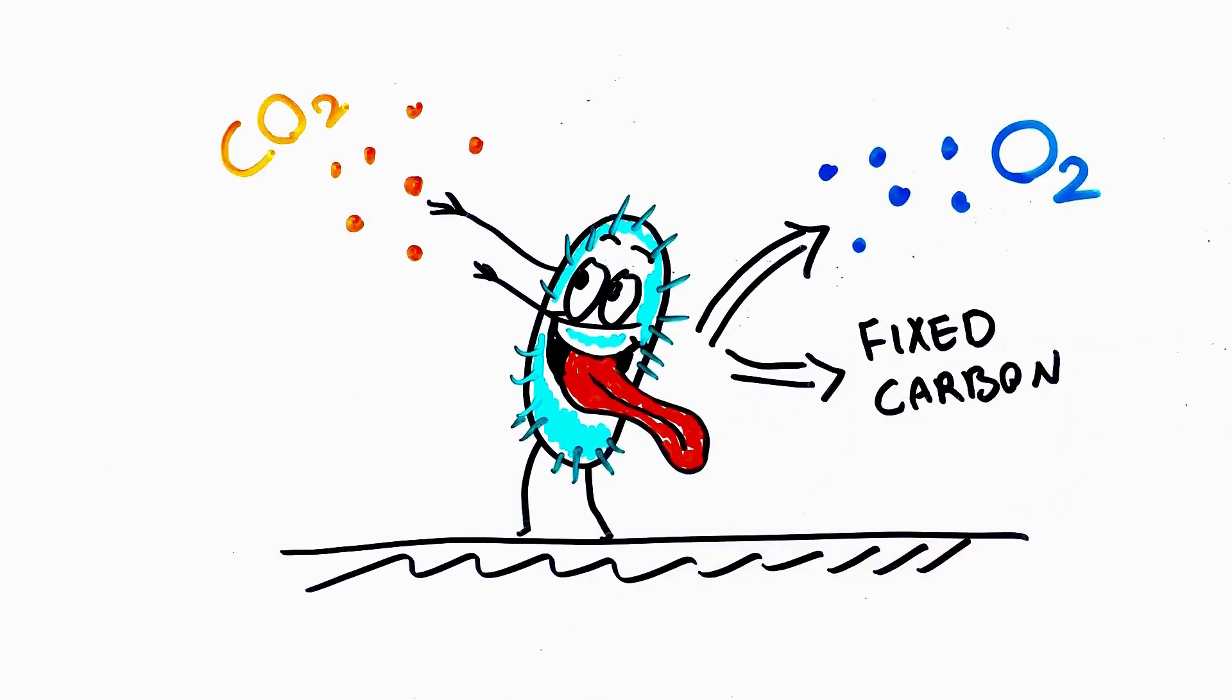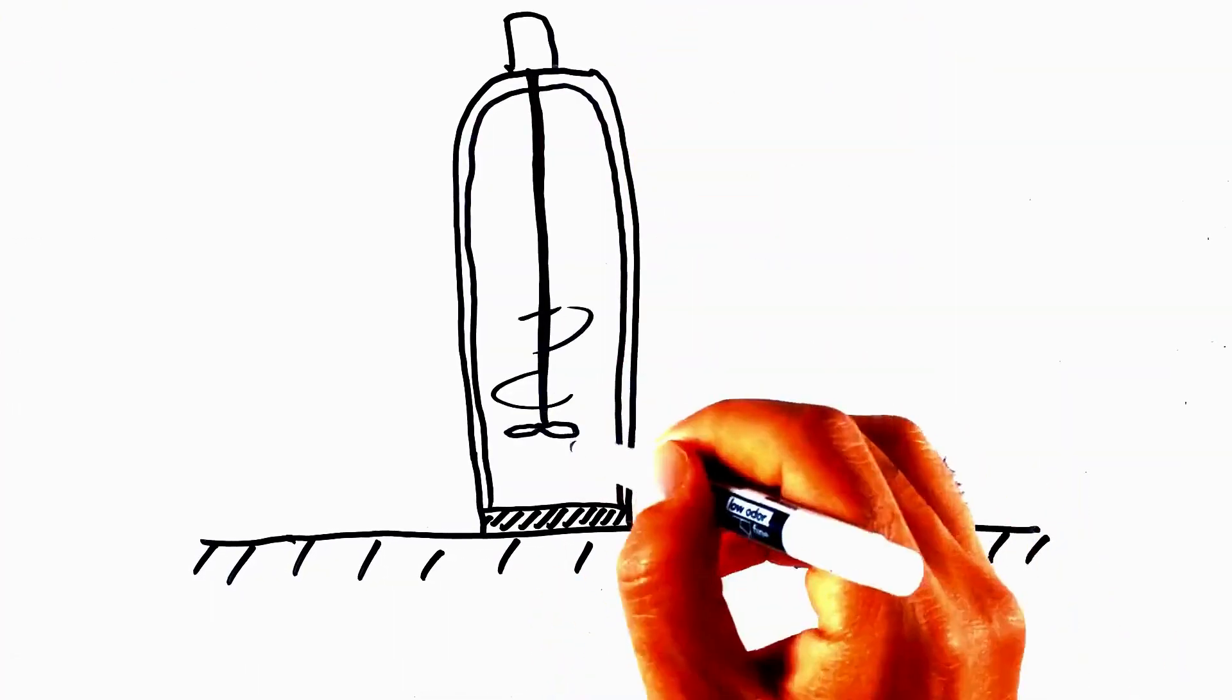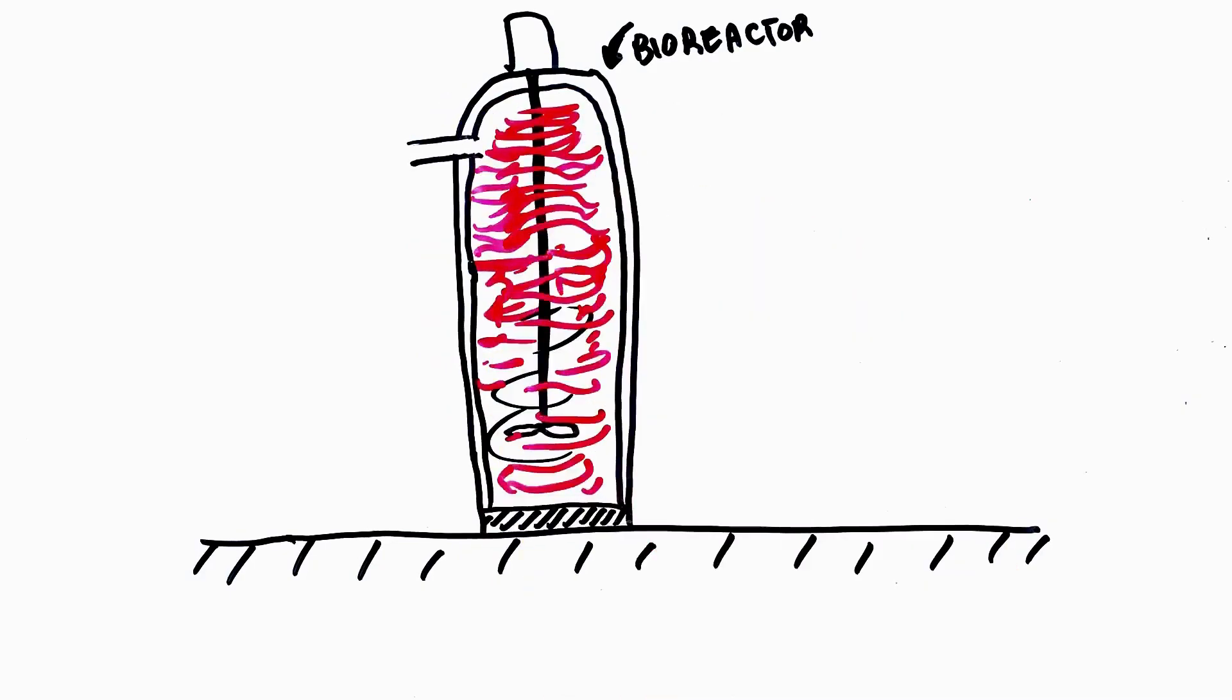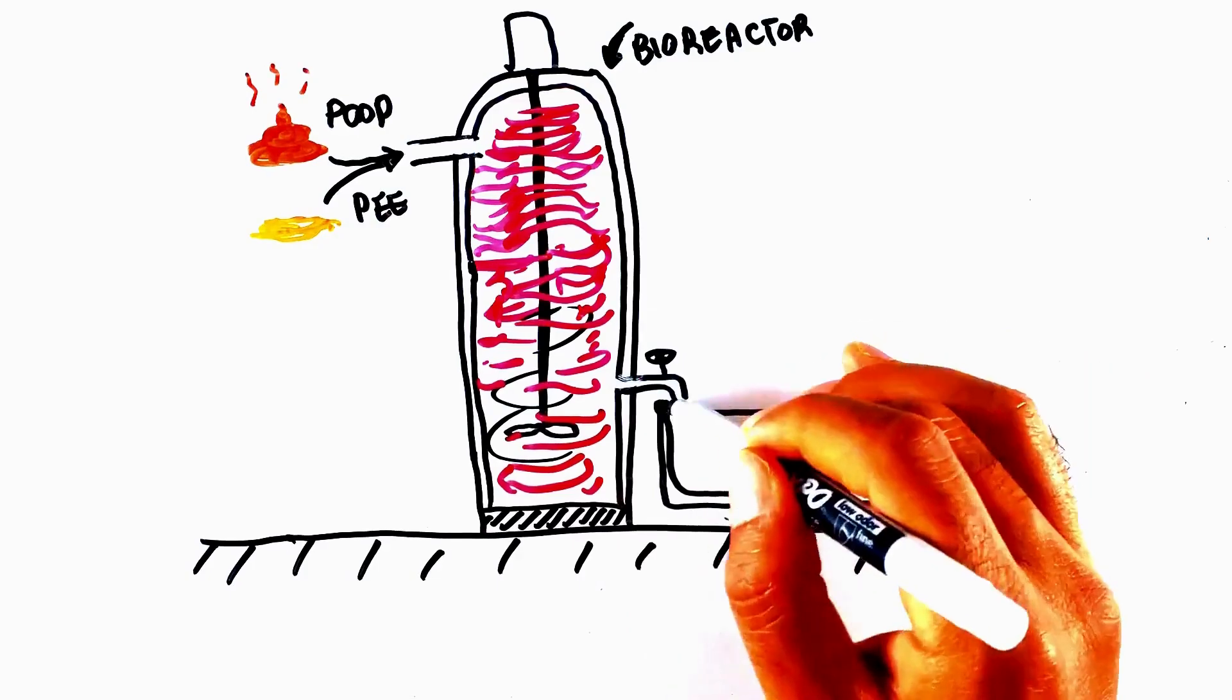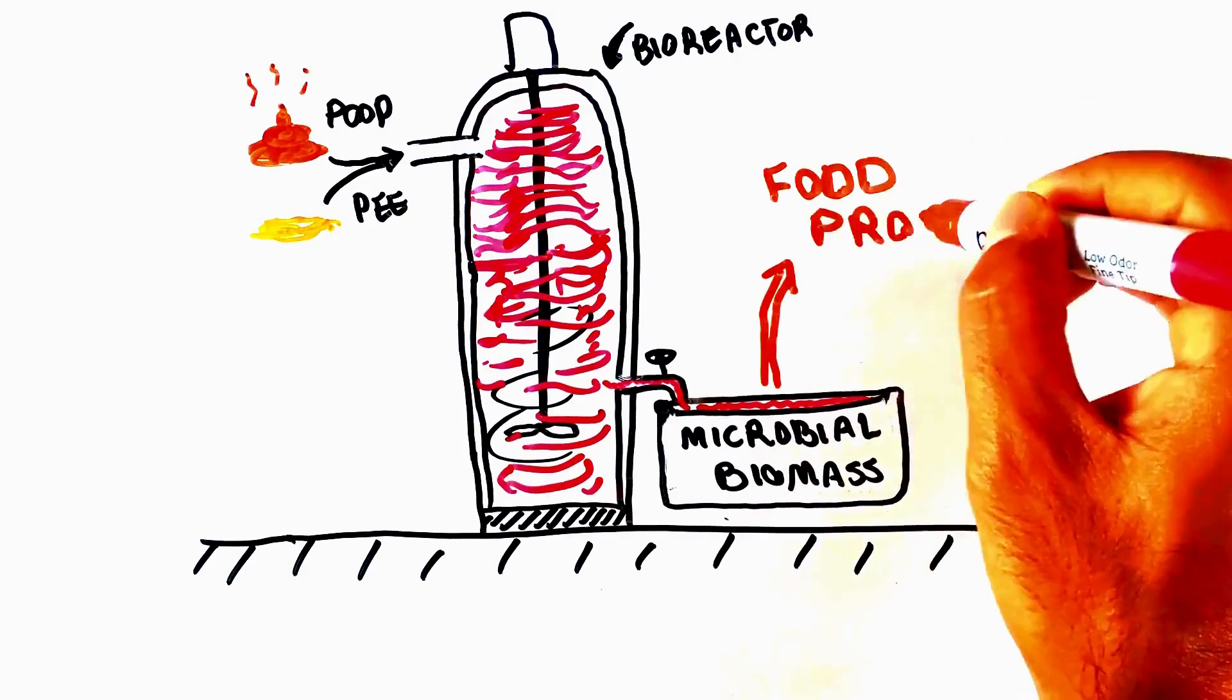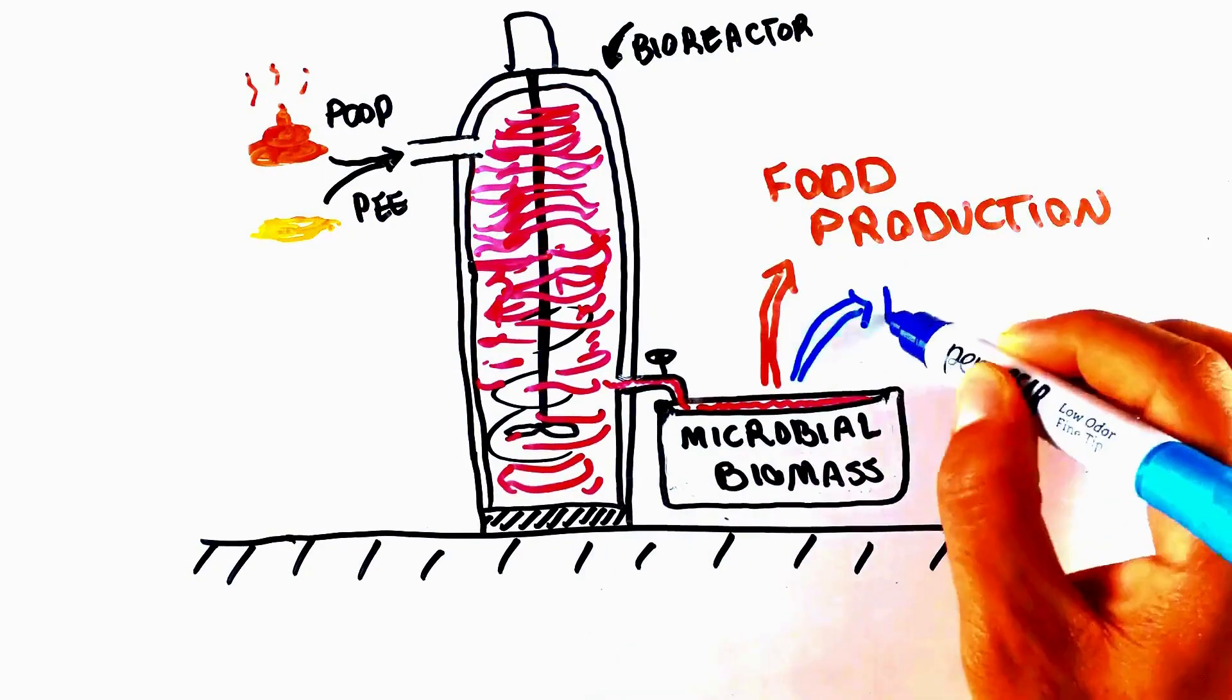The captured carbon can be provided to other facilities as an input. Within the food production facility, the processed liquid and solid human waste coming from the life support and environmental control facility can be anaerobically turned into protein-rich and lipid-rich microbial biomass to be used for food production.